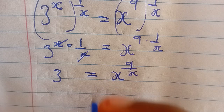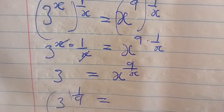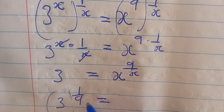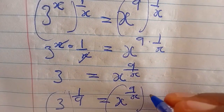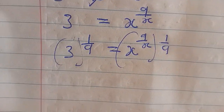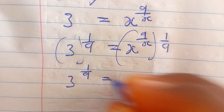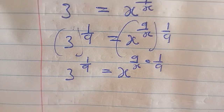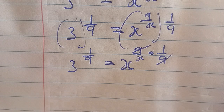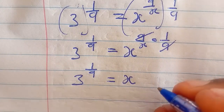So you are going to have 3 exponent 1 multiplying 1 over 9 is equal to x exponent 9 over x multiplying 1 over 9. This 9 cancels this 9, so you are going to have 3 exponent 1 over 9 is equal to x exponent 1 over x.